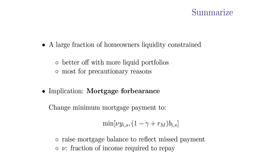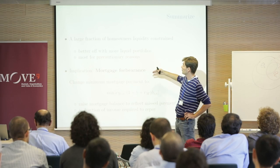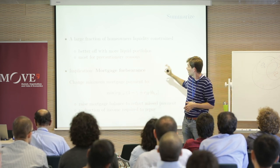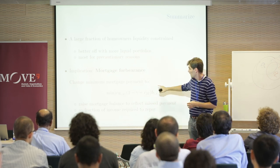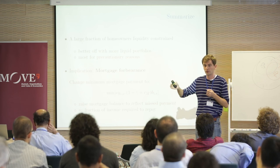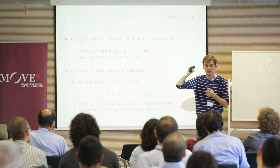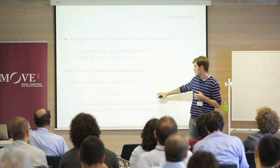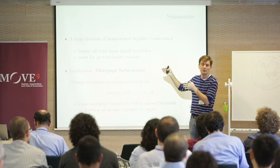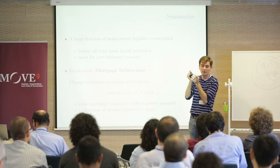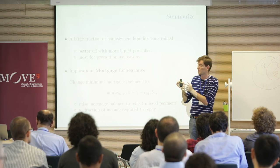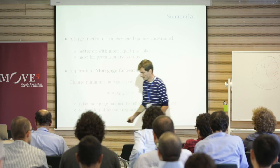To summarize: a large fraction of homeowners are liquidity-constrained and are better off with more liquid assets. For policy, if you believe these guys are liquidity-constrained, this matters when designing mortgage forbearance programs. In practice, tying forbearance to a fraction of income doesn't help the most liquidity-constrained people — those with a lot of housing equity and very little mortgage debt — who would value liquidity most but get no benefit from payment reduction.